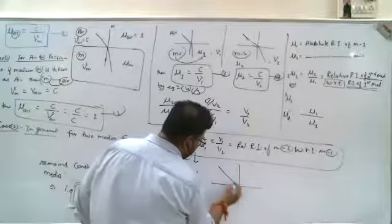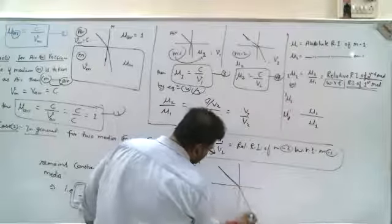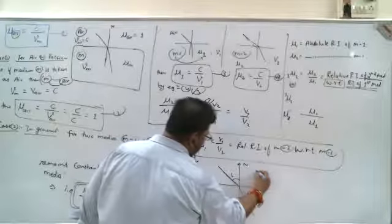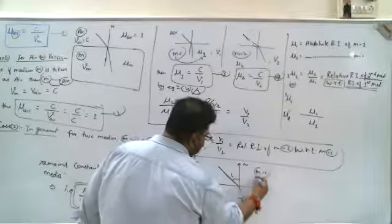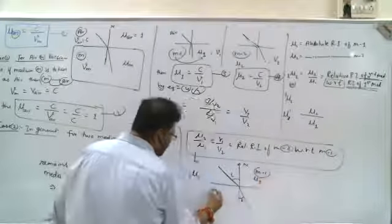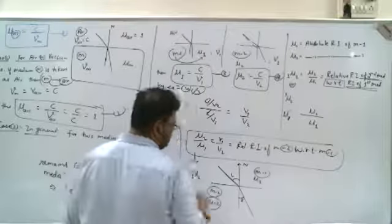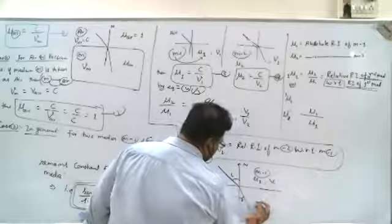If we talk about Snell's law again, then if this is i, this is r, I will call it medium 1 and its refractive index mu1. I will call it medium 2 and its refractive index mu2, and its speed v1 in the first medium and inside its speed v2.